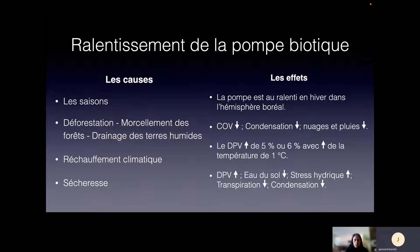Avec le réchauffement climatique, on a une augmentation du déficit de pression de vapeur : plus il fait chaud, plus l'air est sec. Si l'air est sec, ça demande beaucoup aux arbres. La sécheresse augmente le déficit de pression de vapeur — l'air est plus sec — ce qui crée une diminution de l'eau dans le sol, augmente le stress hydrique des arbres et diminue leur transpiration. À partir du moment où il manque d'eau dans le sol, les arbres vont fermer leurs stomates, et ça va diminuer la condensation et les pluies qui viennent par la suite. Tout est interrelié.